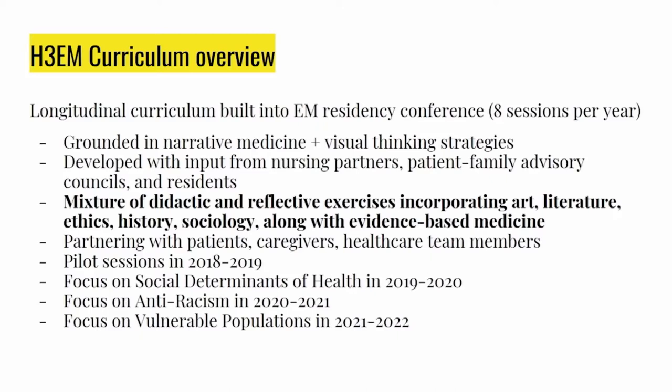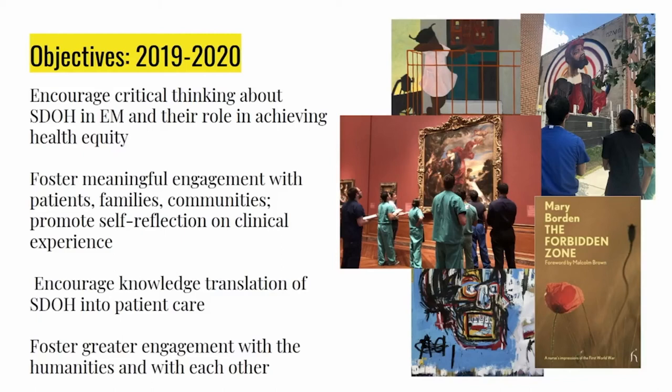For the 2019–2020 year, we had four objectives: encourage critical thinking about the social determinants of health and their role in achieving health equity; foster meaningful engagement with patients, families, and communities while promoting self-reflection in clinical practice — too often we're focused on efficiency without thinking about what's happening to us in that process; encourage knowledge translation of the social determinants of health into patient care; and foster greater engagement with one another and with the humanities.